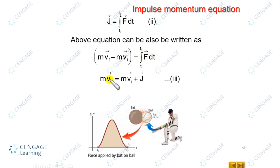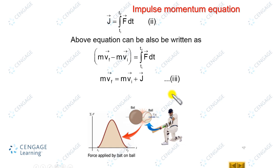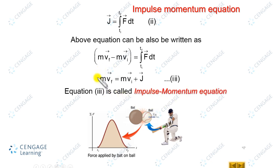We can further write: m·v-final equals m·v-initial plus J-vector. This is the third equation, and we call this the impulse-momentum equation. We will use this equation in cases of collision and for determining the impulse between colliding bodies.